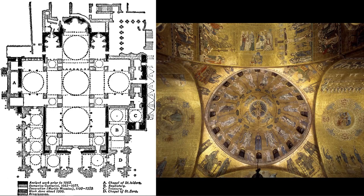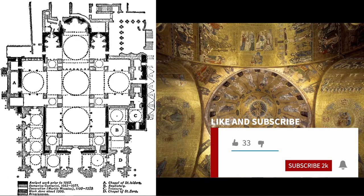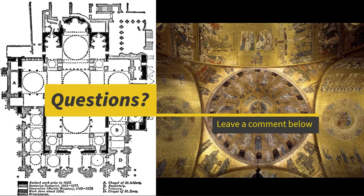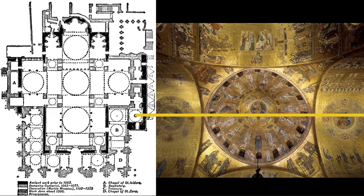There are churches in the West that are built more on the Byzantine model, even though they may be churches now used for the Latin Rite. A famous example is Saint Mark's Cathedral in Venice — here you can see it on a Greek cross pattern. Venice had very close associations with the East, and this is a church we will be exploring next time. Until then, thank you for joining us — do like and subscribe and put any questions or observations underneath the video. Until next time, thank you for being with us and cheerio for now.